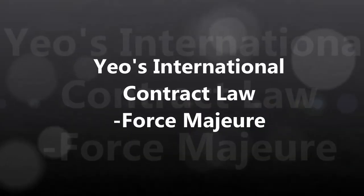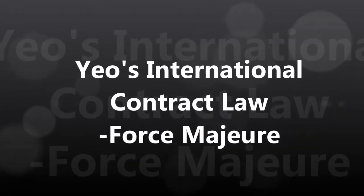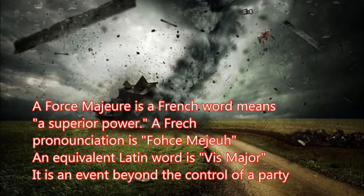In international contract law, Force Majeure is a French word meaning 'superior power.' The French pronunciation is more like 'Force Majeure.' An equivalent Latin term is 'vis maior.' It refers to an event beyond a party's control that hinders the performance of a contract.